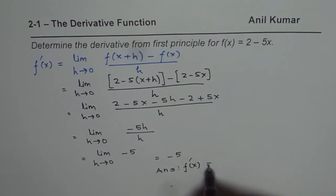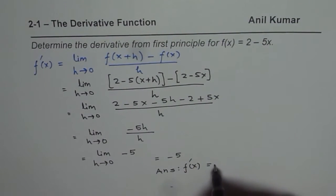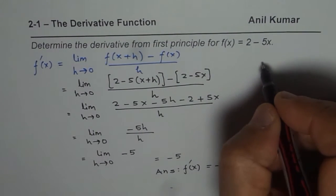For the linear function, f dash x, or the derivative of the function at any point, is minus 5. So it is constant. So what you observe here is,